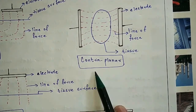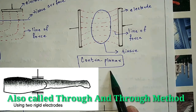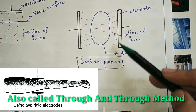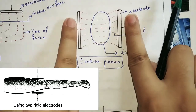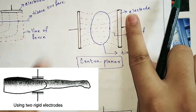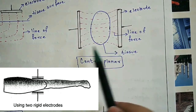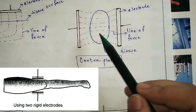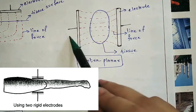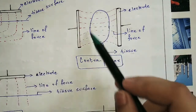Next is the contra-planar method, also called the through-and-through method. In this method, the electrode pads are placed on either side of the body part — for example, on both sides of the knee joint. The electric field passes through the tissue and deeper tissue is heated.